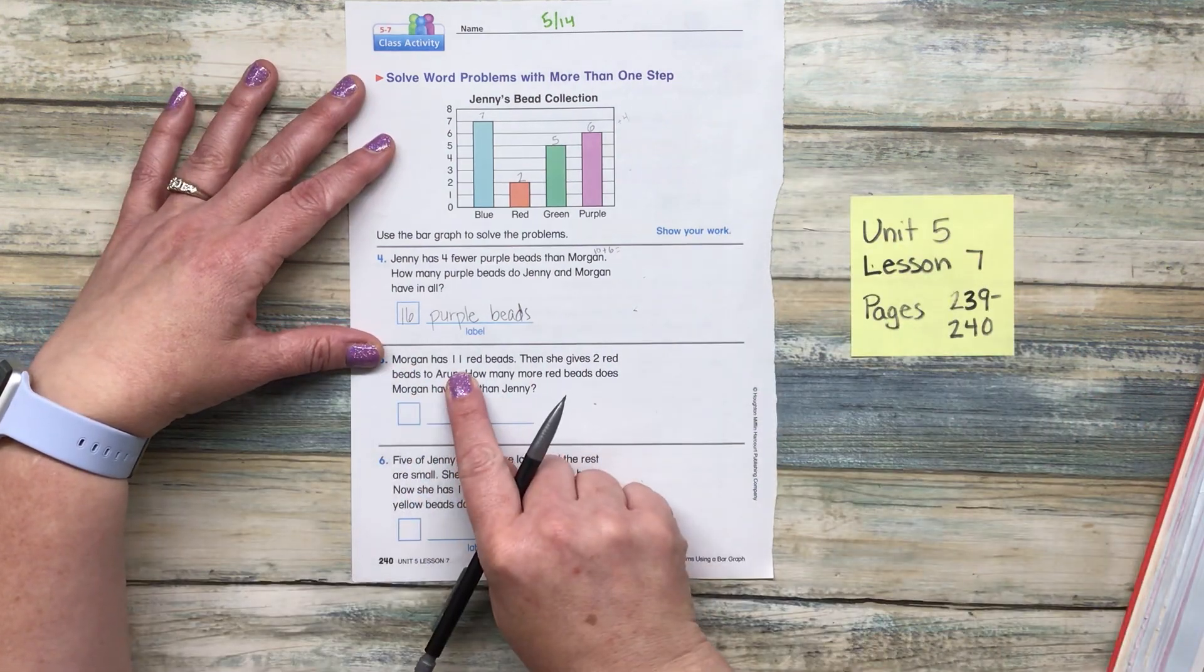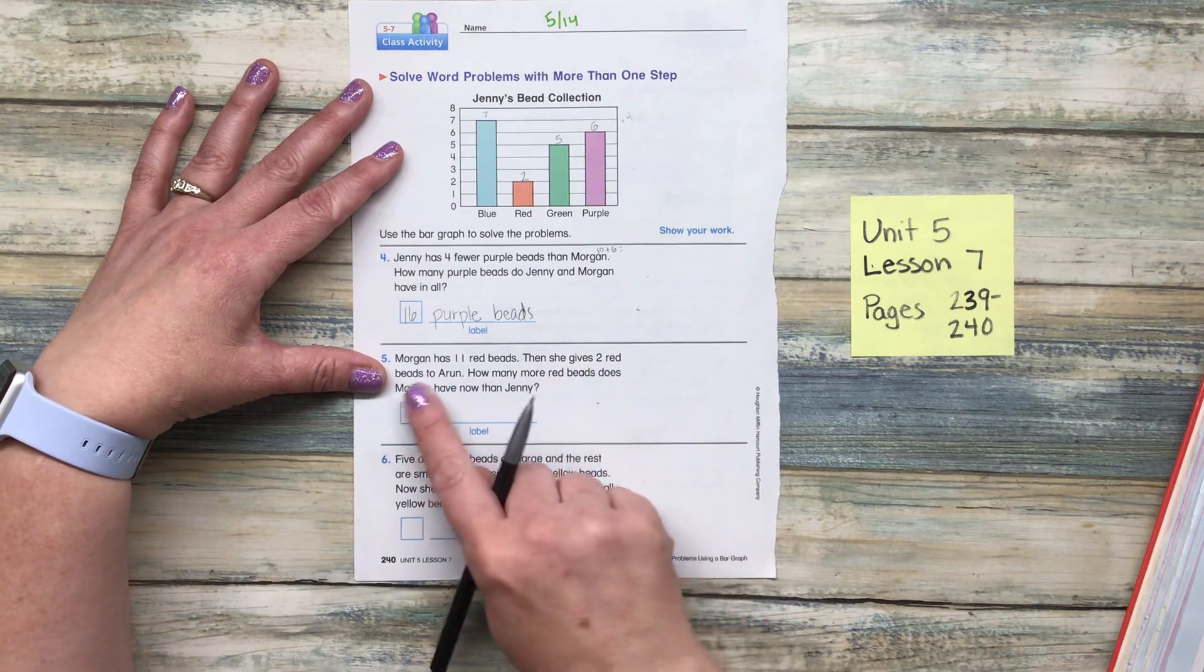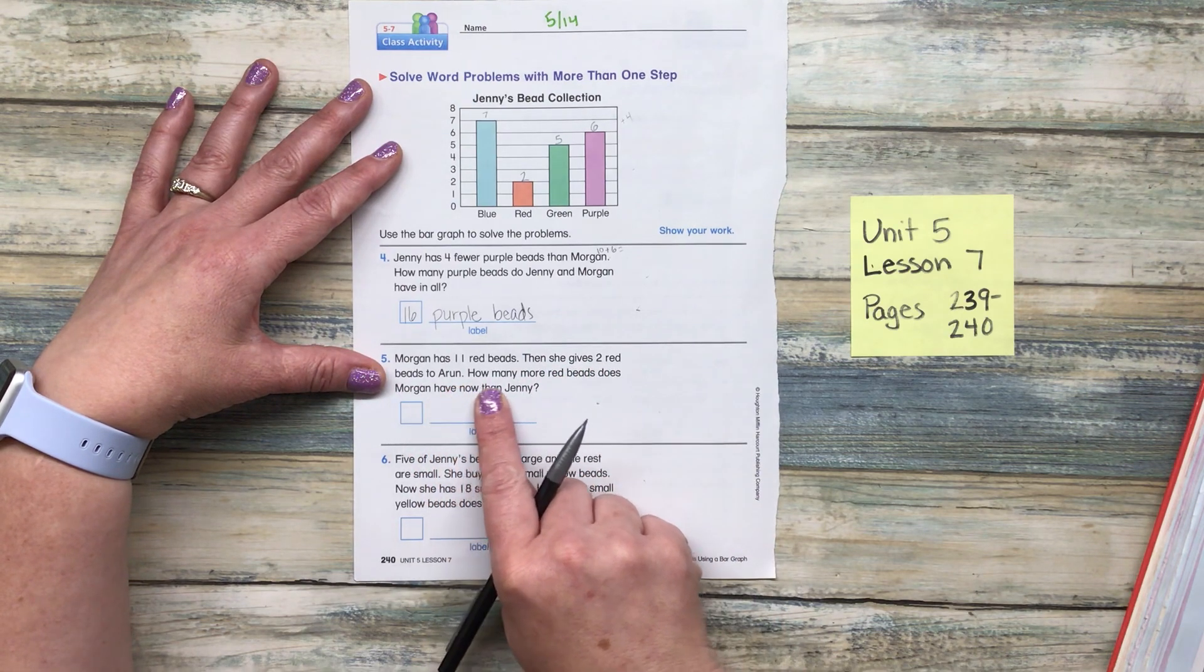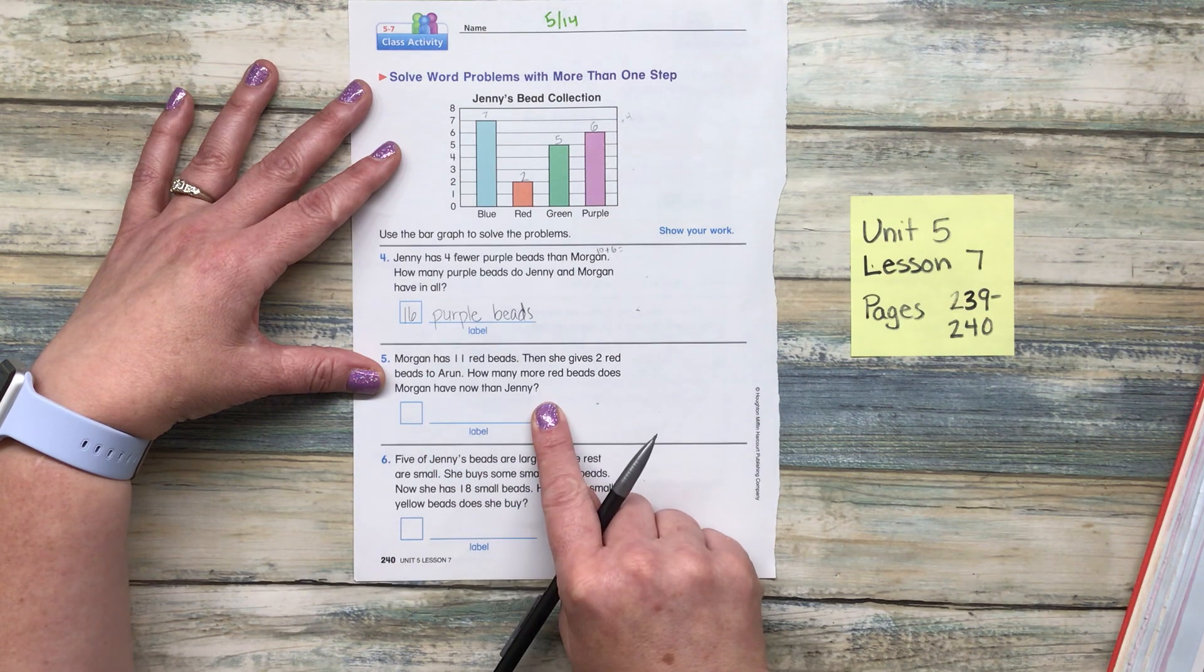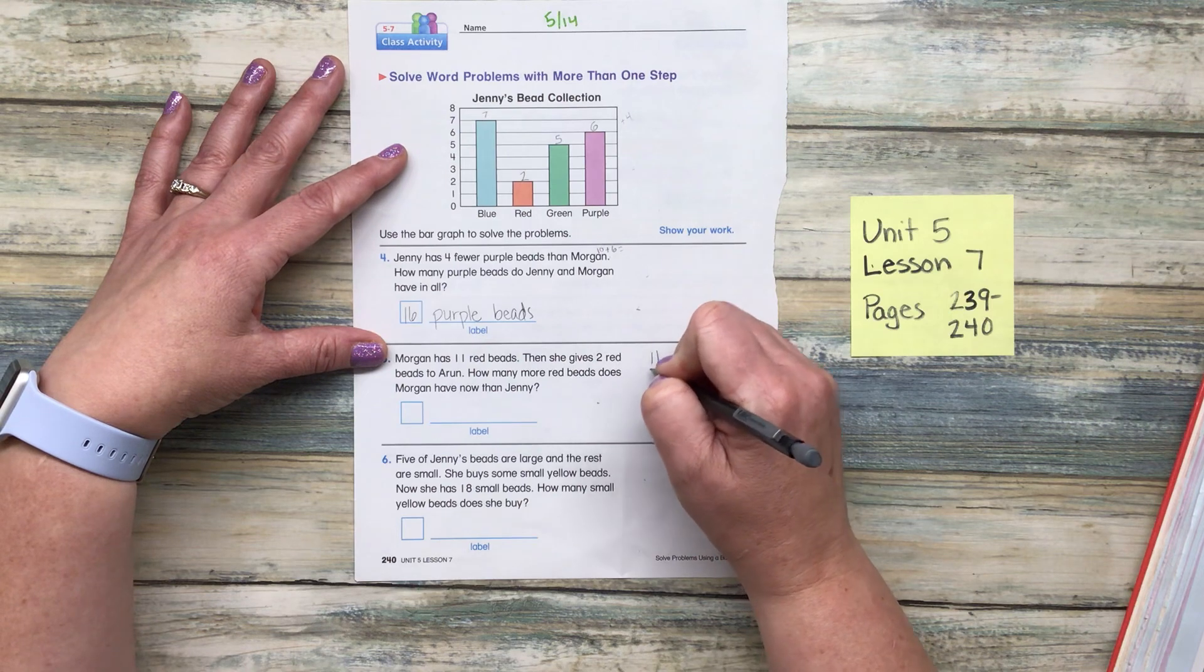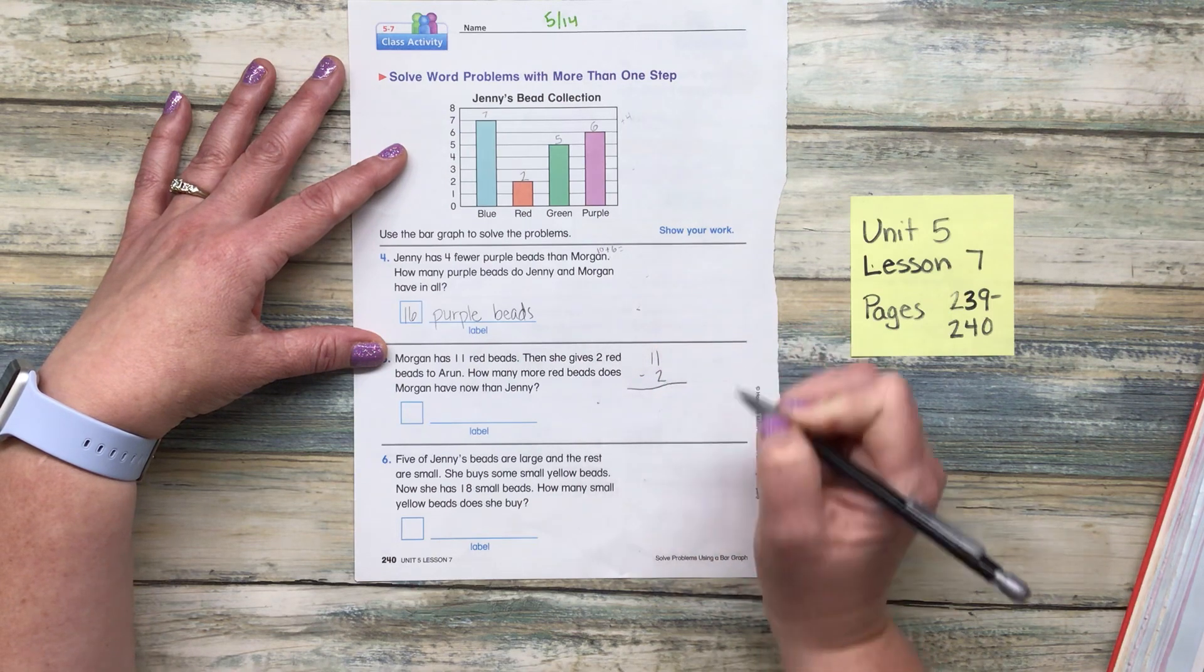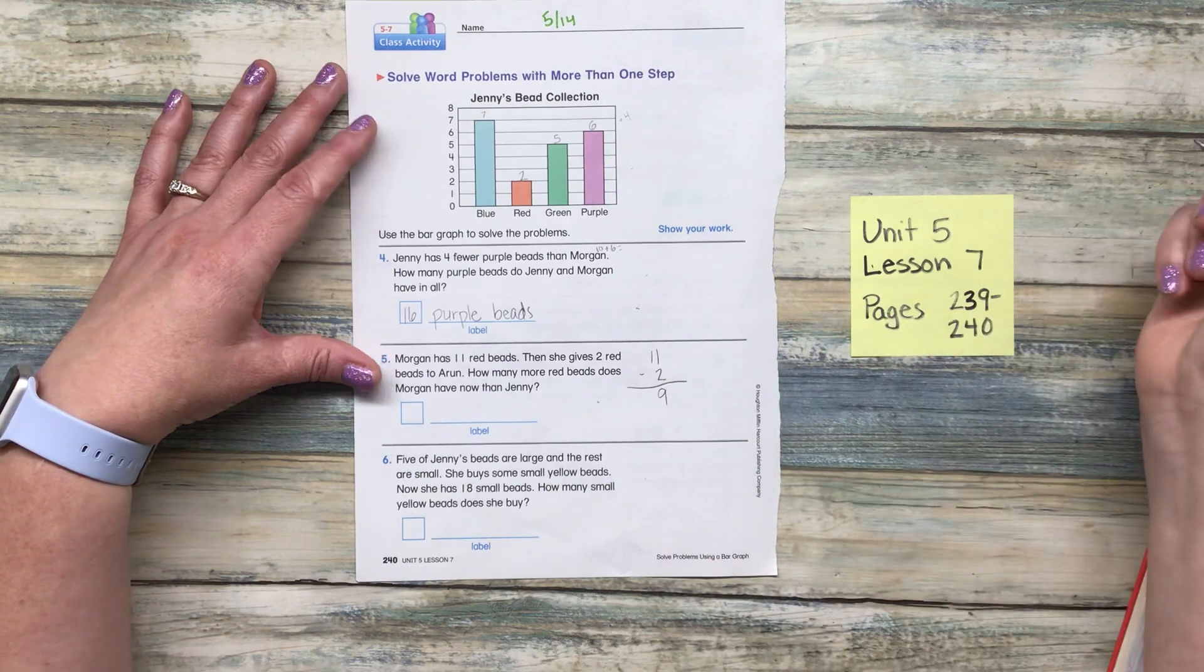So Morgan has 11 red beads. Then she gives two red beads to Aaron. How many more red beads does Morgan have now than Jenny? So the first thing we need to do is we need to take away those two beads that she gave to Aaron. And now she has nine beads left.